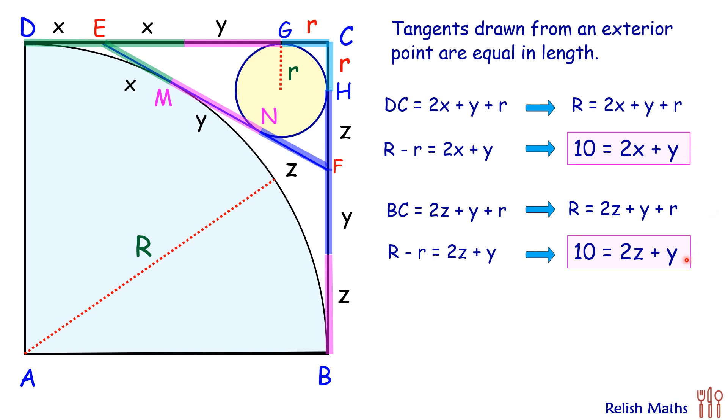Adding these two equations, LHS will be 20 and RHS will be 2x plus 2y plus 2z. Now dividing the full equation by 2 we are getting x plus y plus z equals 10, and that's what we are looking for because EF we have divided in three lengths x, y, and z.